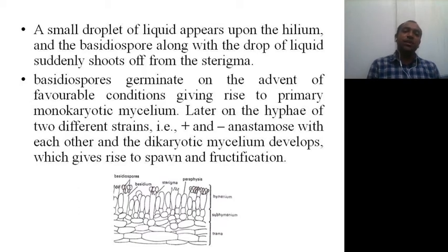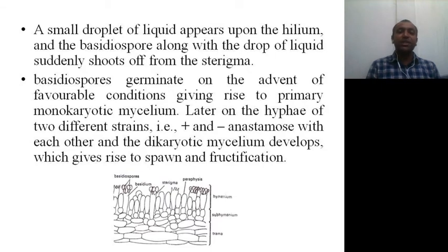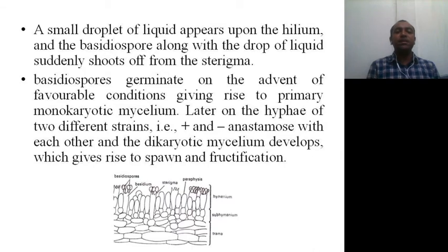A small droplet of liquid appears upon the sterigma, and the basidiospore along with the droplet of liquid suddenly shoots off from the sterigma. Once the basidiospores are discharged, they germinate under favorable conditions — humidity, moisture, shady conditions, and rainy season — giving rise to primary monokaryotic mycelium.